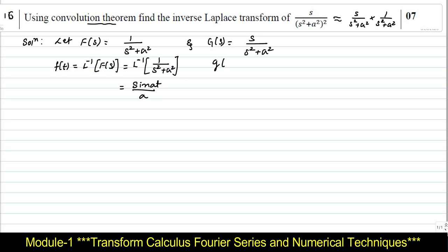Similarly, I will find out g(t). g(t) is nothing but L⁻¹ of g(s), which is L⁻¹ of s/(s² + a²), and that is nothing but cos(at). So g(t) = cos(at).